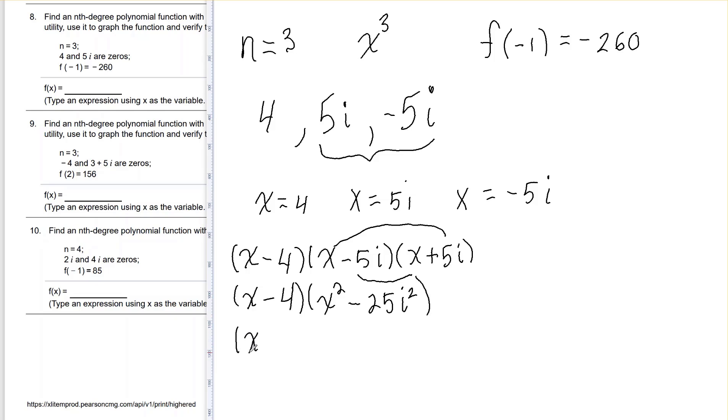And hopefully you remember that i squared has a value negative 1. So I'm going to replace the i squared with a negative 1. And what you'll see then is that this negative and negative make a positive. So what I really have is x squared plus 25.